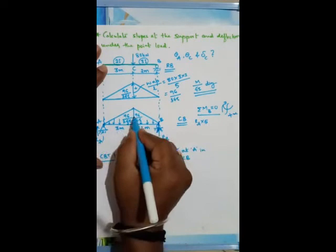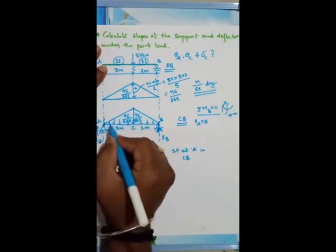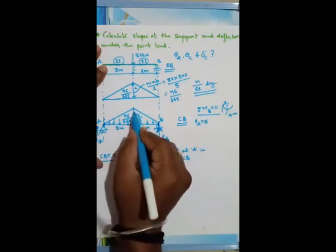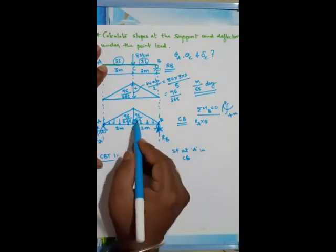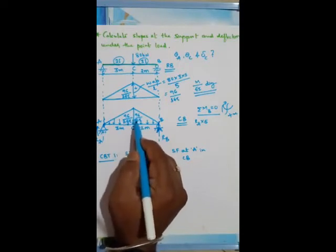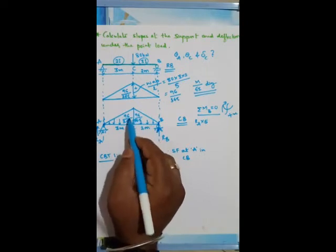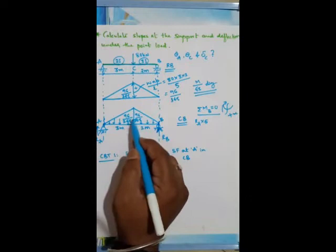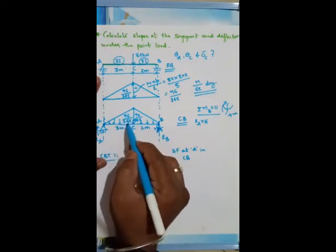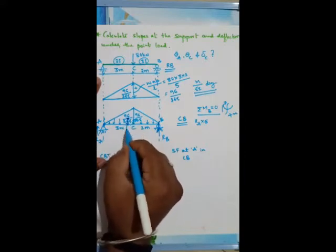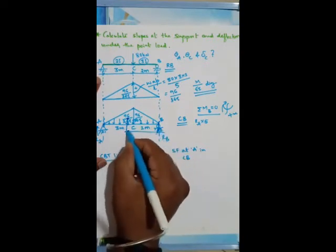Then we consider this triangle. Either consider the entire triangle as one, or split into two separate triangles. But here both triangles have different heights — this side is 96/2EI and this side is 96/3EI — so we cannot treat the entire figure as one triangle. We need to split into two triangles. If I consider this triangle (A to C), its centroid is somewhere here.